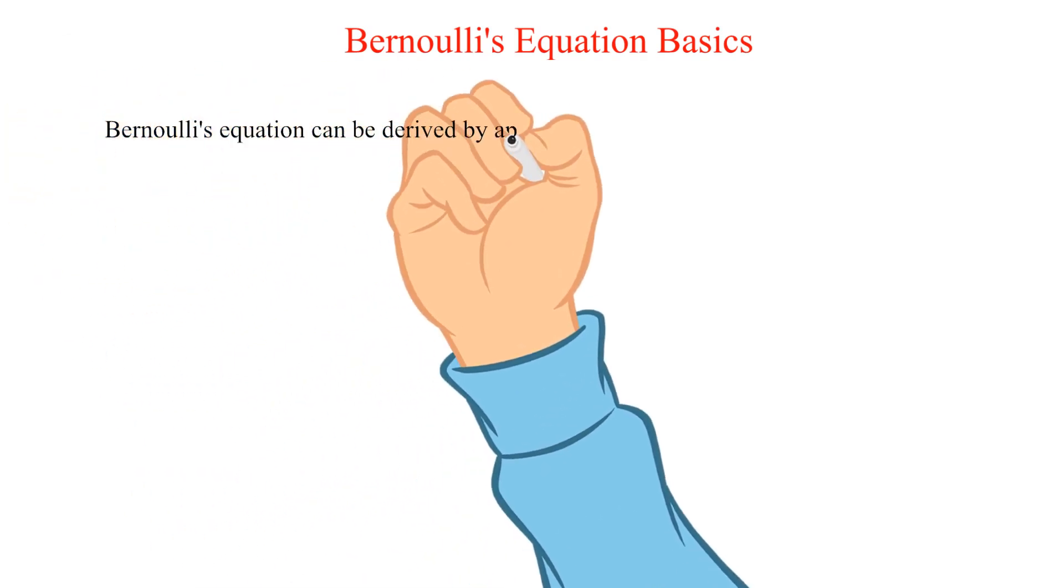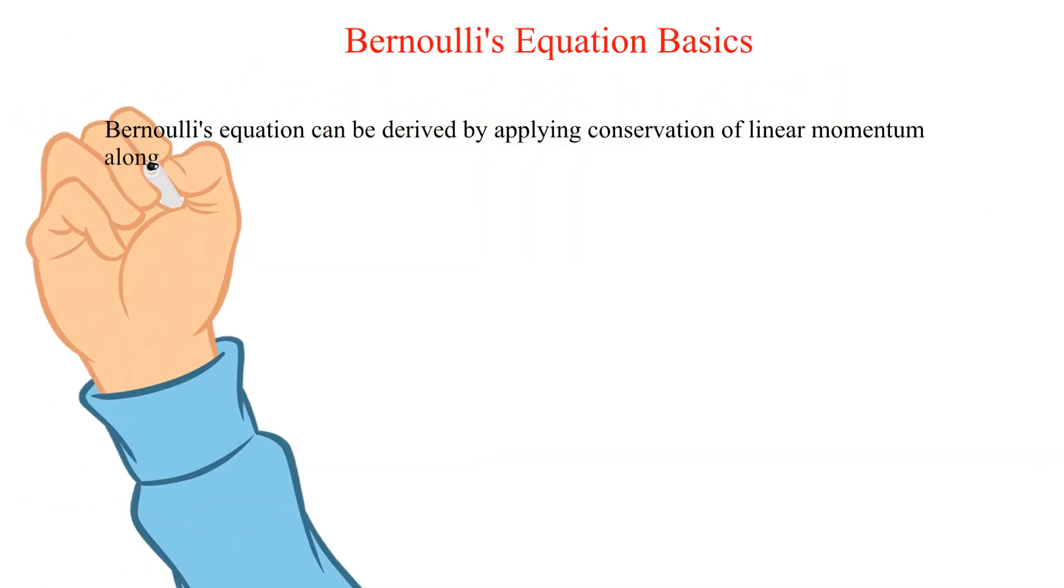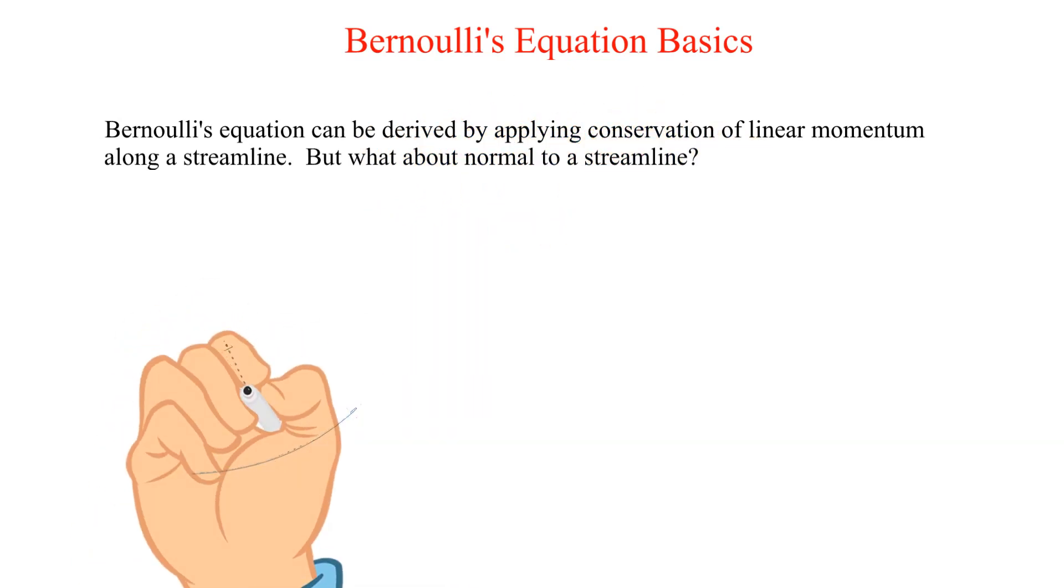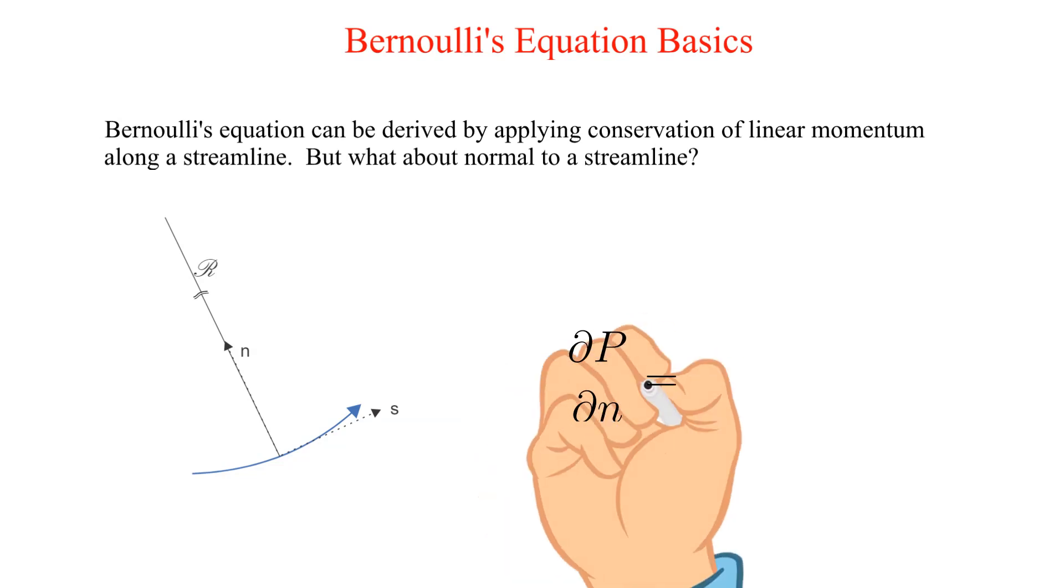Bernoulli's equation can be derived by applying conservation of linear momentum along a streamline. But what about normal to a streamline? The equation below gives the pressure gradient in the normal direction. It is a function of the density, velocity squared and the radius of curvature.